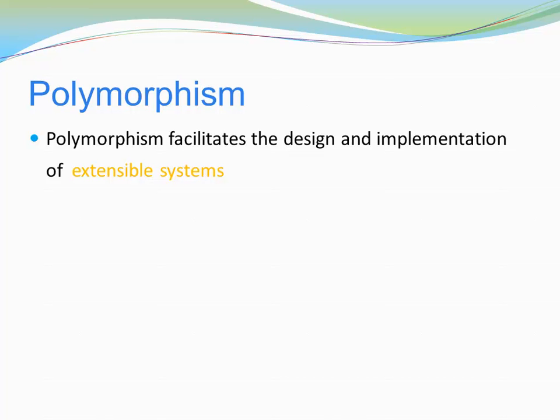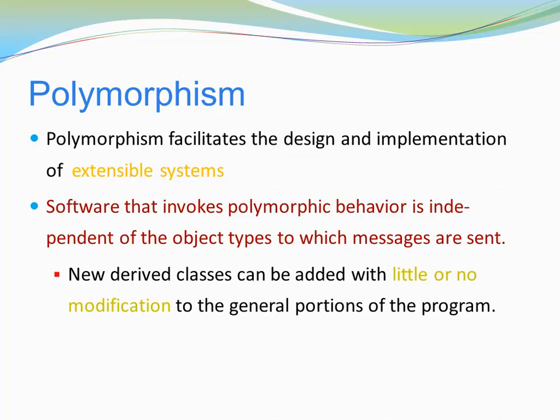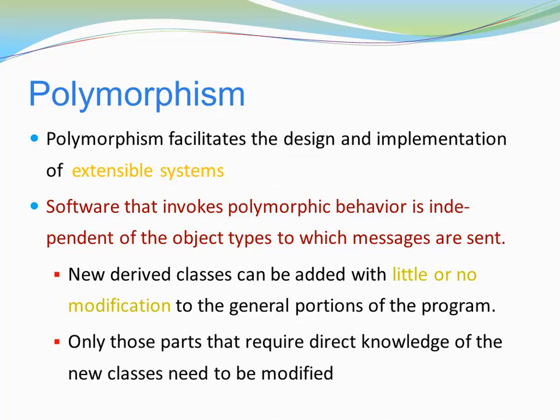Polymorphism facilitates the design and implementation of extensible systems. Software that invokes polymorphic behavior is independent of the object types to which messages are sent. Because of that, you can create new derived classes and add them with little or no modification to the general portions of the program. Only those parts that require direct knowledge of the new classes need to be modified.